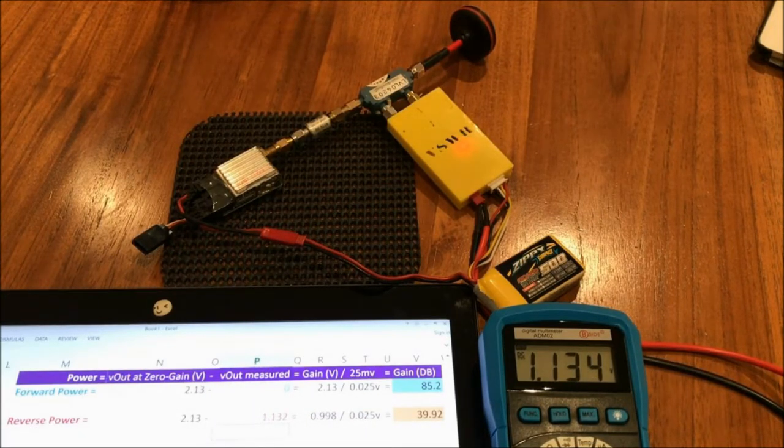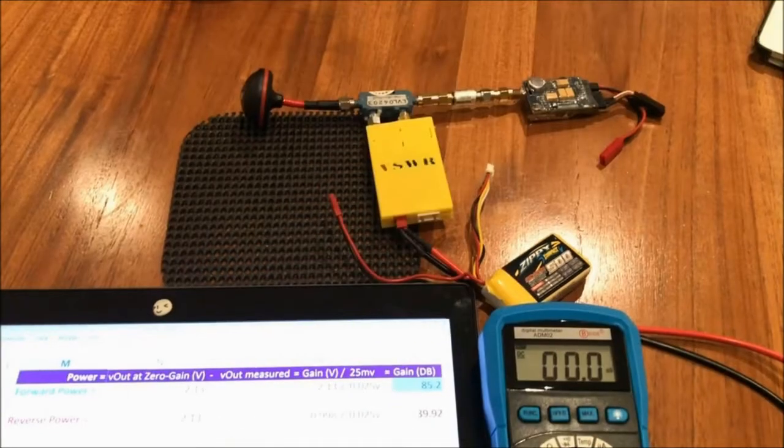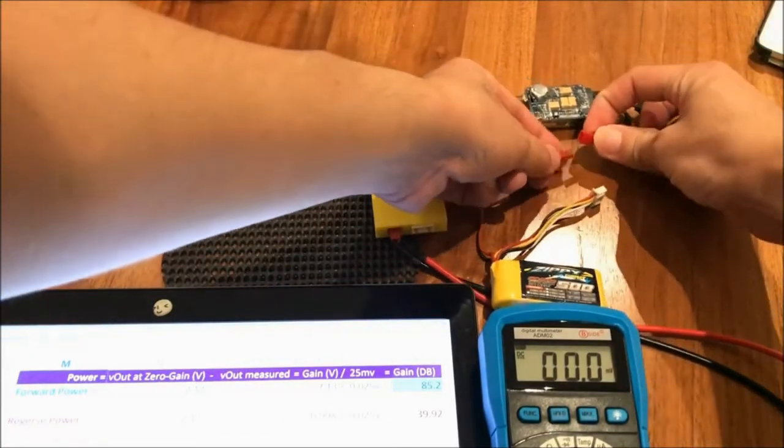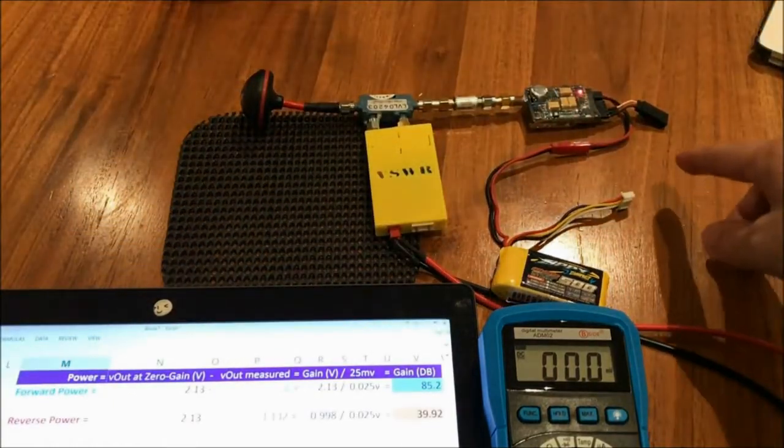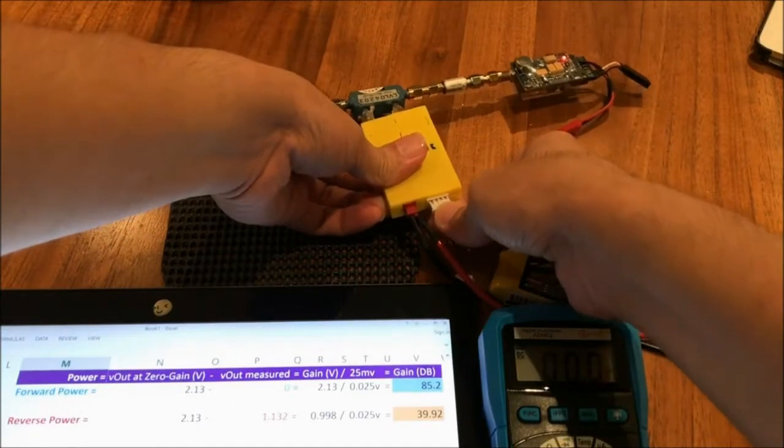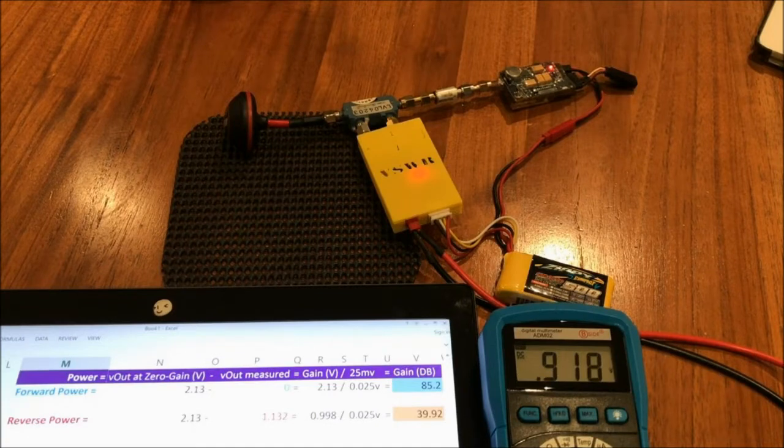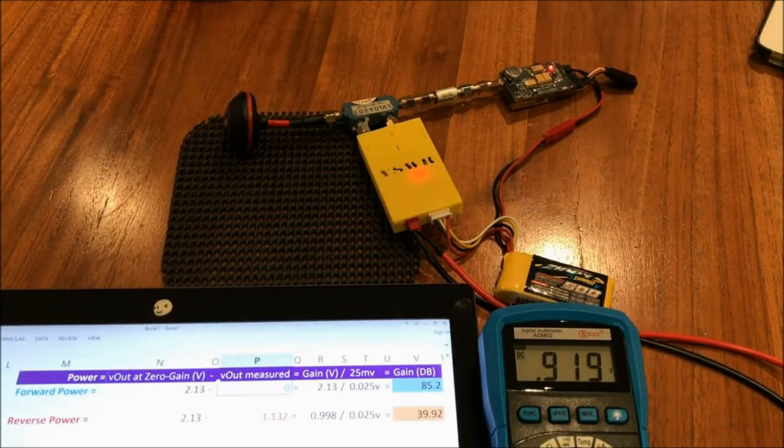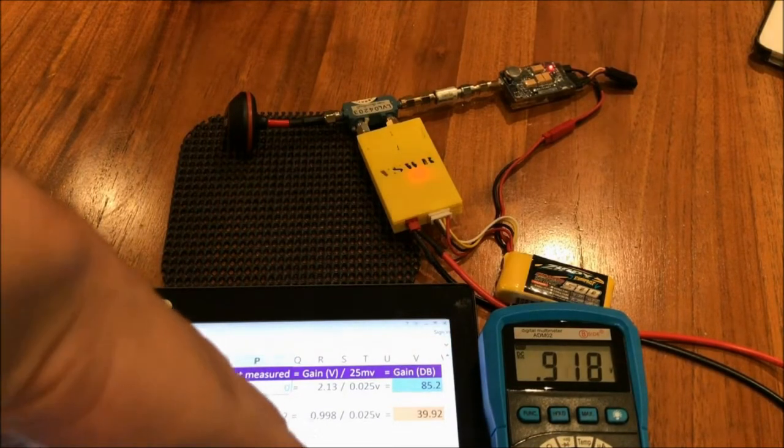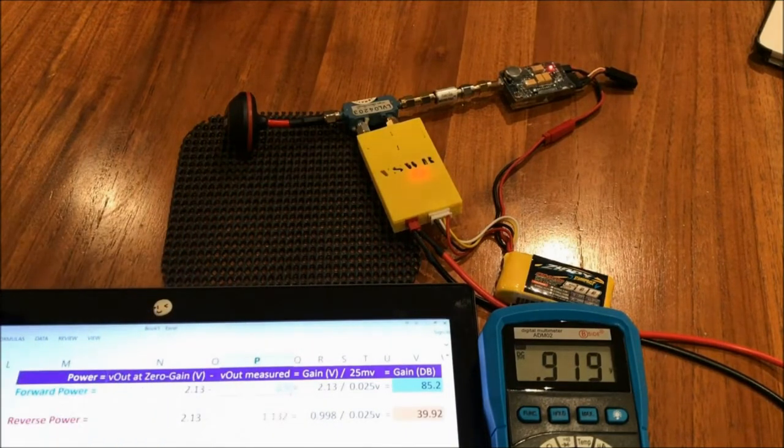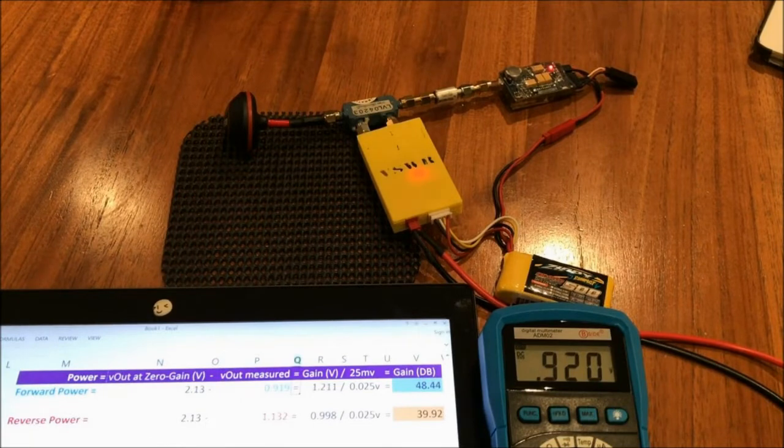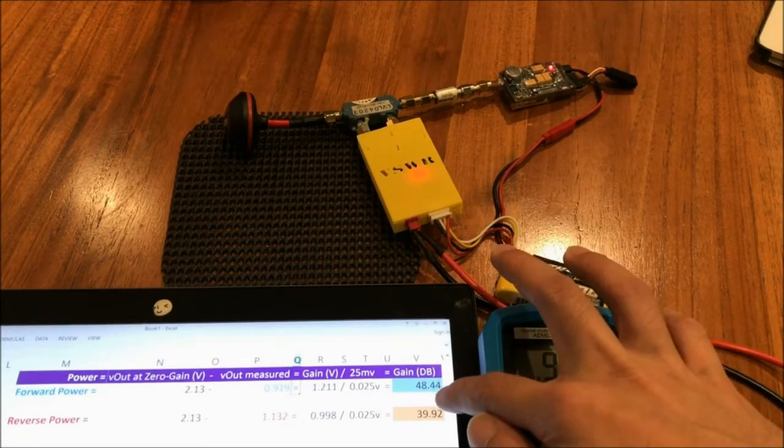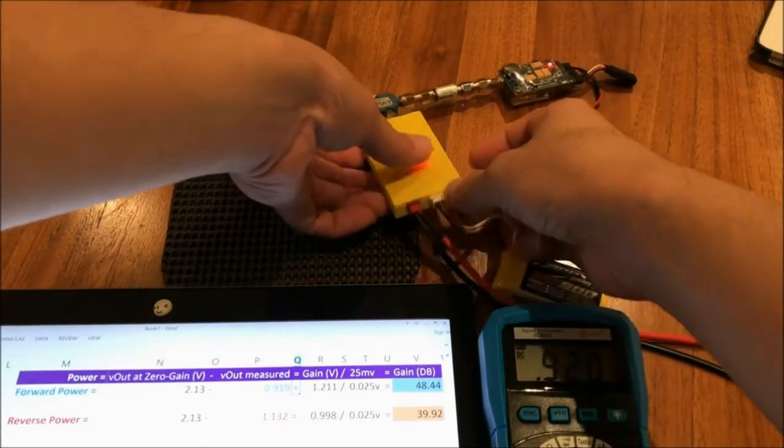So now we're going to do the same to measure the forward power. Alright, I'll hook up the antenna and the video transmitter the other way around. And now time to power on the video transmitter. Again, let it stabilize for a while. Okay, that will do. And time to power on the RF meter. Okay, we're getting 0.917. Let me punch that in. 0.919. Okay, now we have the forward power, which is 48.44 dB. I'm going to power off everything and explain what this spreadsheet is all about.